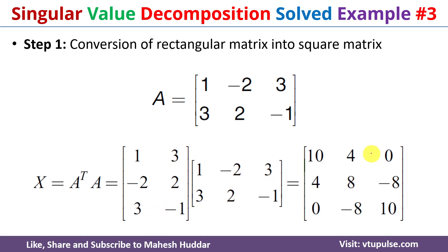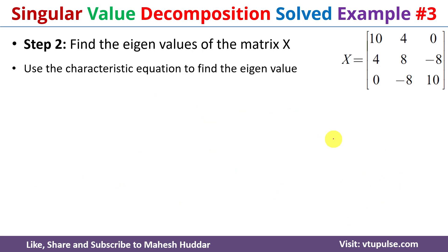We get the result matrix as: 10, 4, 0 in the first row; 4, 8, minus 8 in the second row; and 0, minus 8, 10 in the third row. Once we find this square matrix, the next step is to find the eigenvalues.